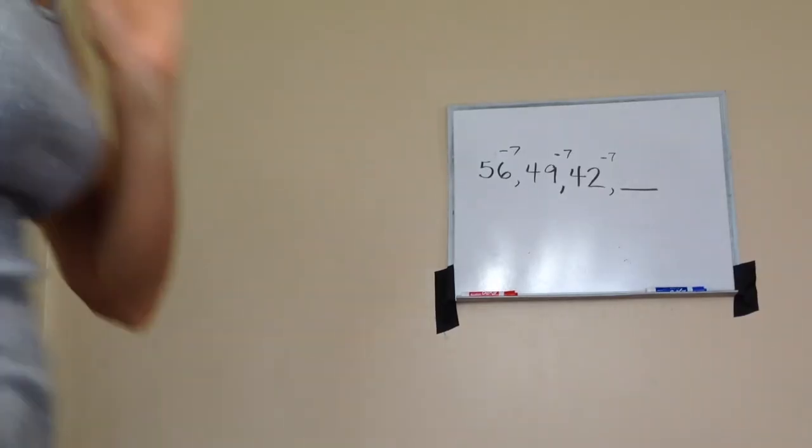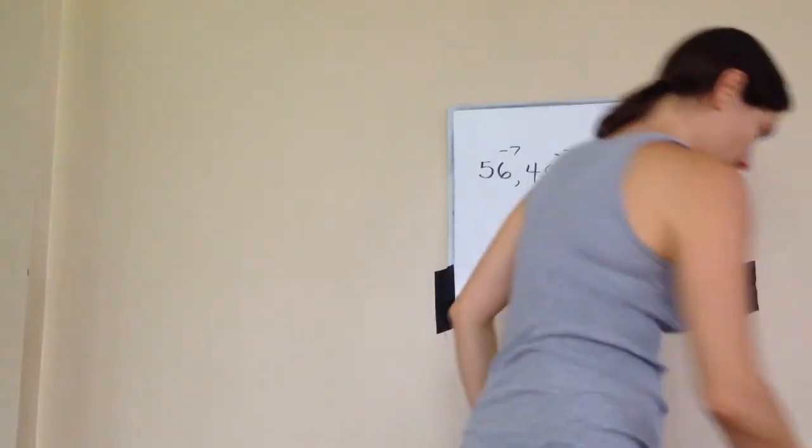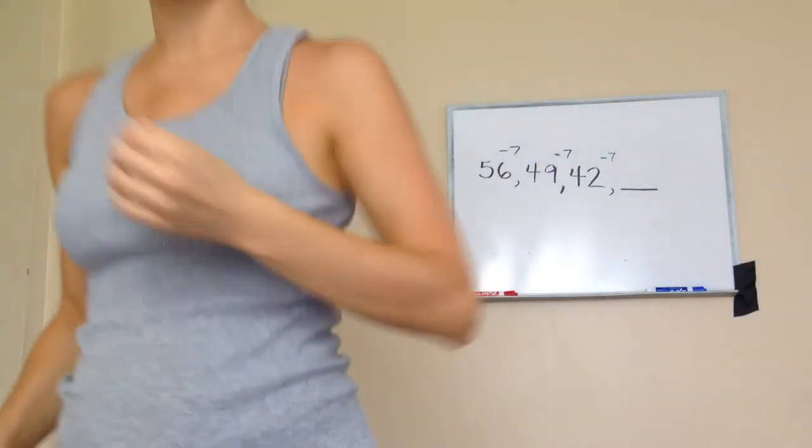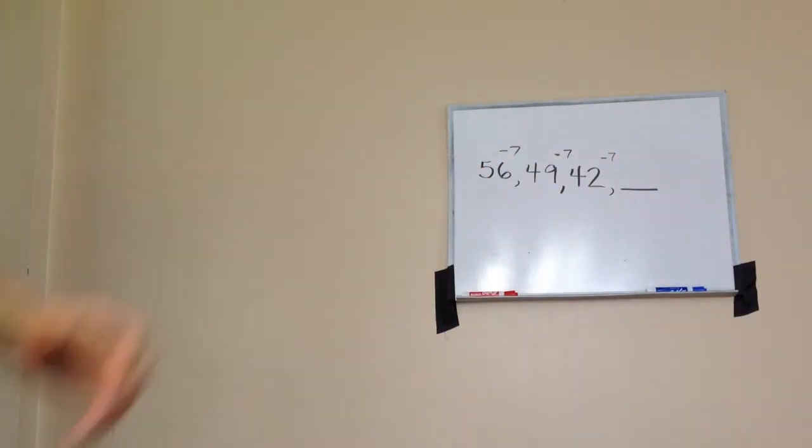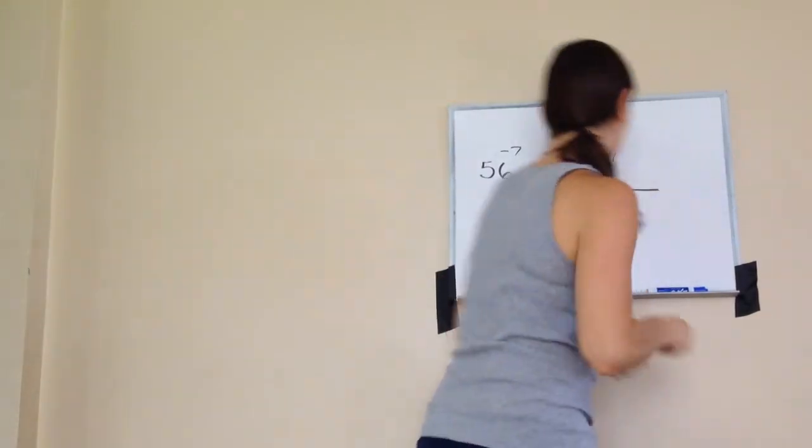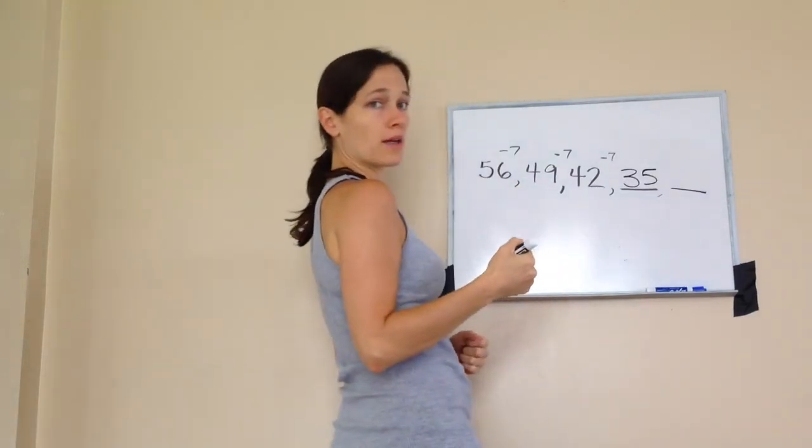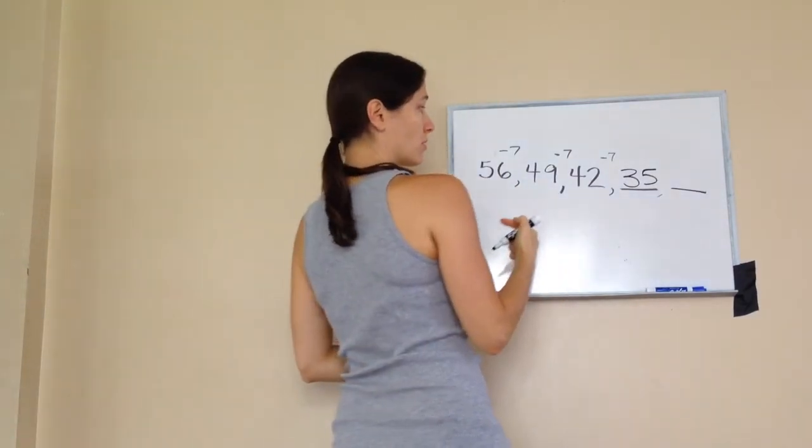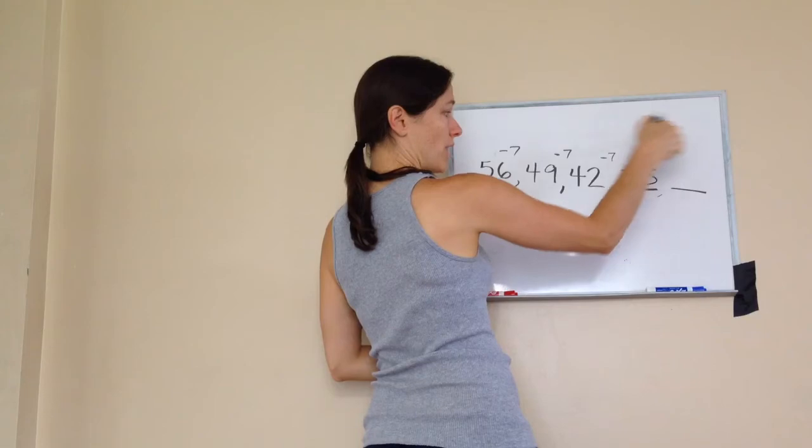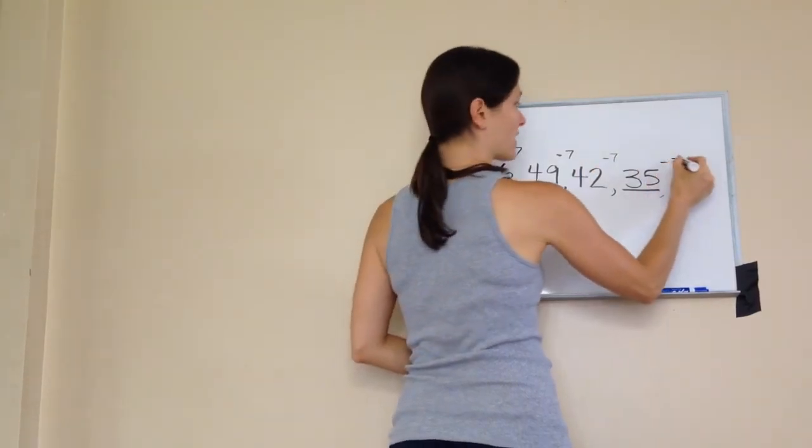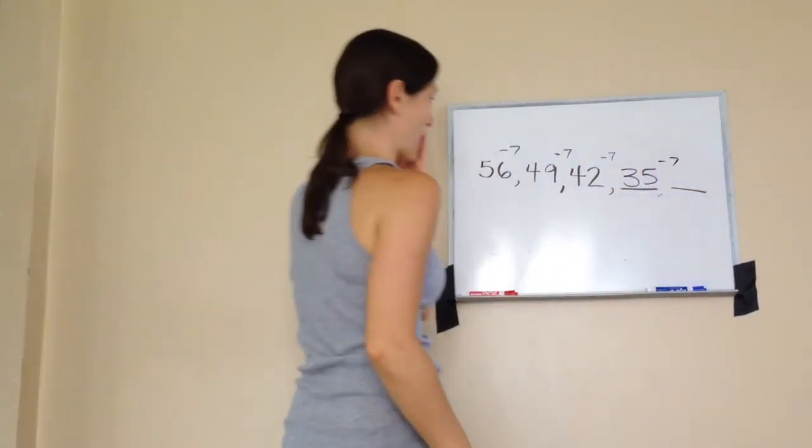All right, to finish up that one, let's go on. What did you think it was? What was your answer? 35. 35, you're exactly right. And if I was to go to the next one, what would I do? What would my rule be? What am I doing each time? Taking away seven. Taking away seven, so that's all we would need to do to figure that one out.